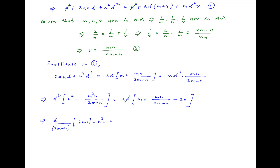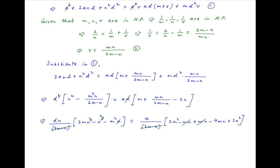Taking a common denominator on the left-hand side, we get d divided by (2m minus n) times (2mn squared minus n cubed minus m squared n). On the right-hand side, we get a divided by (2m minus n) times (2m squared minus mn plus mn minus 4mn plus 2n squared). The factor (2m minus n) cancels in the denominator on both sides. Taking n common outside the bracket on the left-hand side, and cancelling out the mn terms within the brackets on the right-hand side.